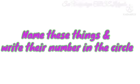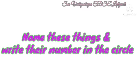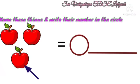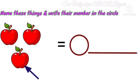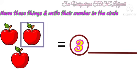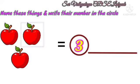Let's move on to the next concept. Name these things and write their number in the circle. Tell me what fruit is this? Yes, this is an apple. Tell me how many apples are there? 3. Yes, so write 3 in the circle.